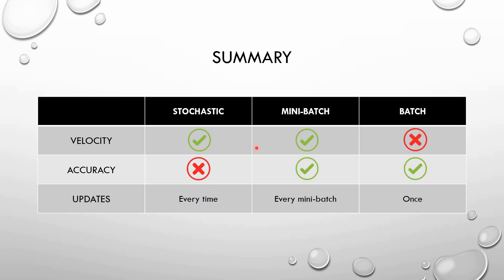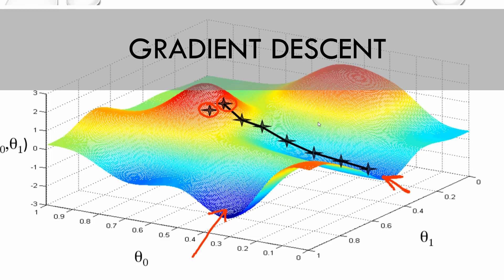So to sum up, we have the three types of gradient descent: the stochastic, the minibatch, and the batch. And the most used algorithm is the minibatch. Thank you for watching and see you in the next video.